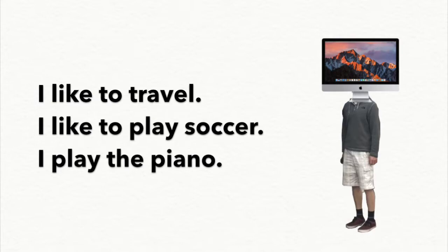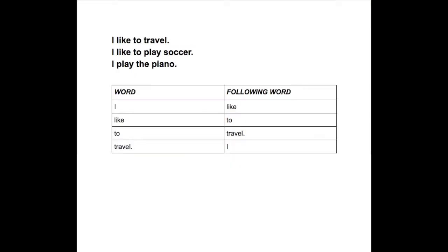So after looking at the first sentence, my data structure might look something like this. The word 'I' is followed by the word 'like.' The word 'like' is followed by the word 'to.' 'To' is followed by 'travel,' and 'travel' has a period at the end of it. And then the next word that gets read in is the word 'I,' which is actually part of the second sentence.